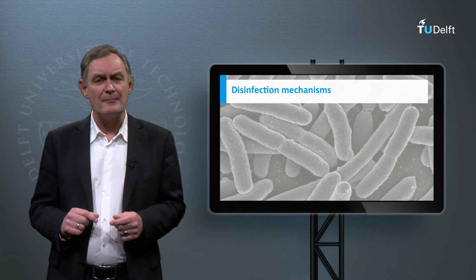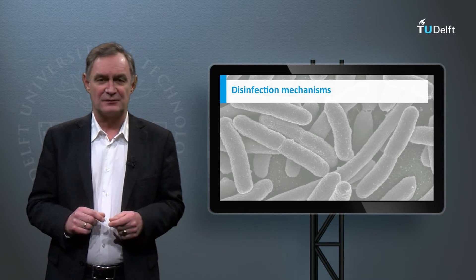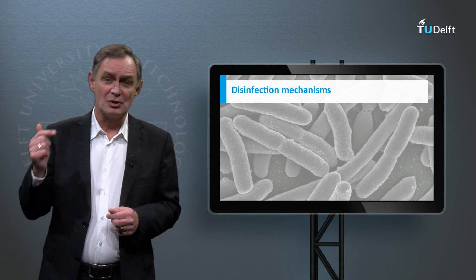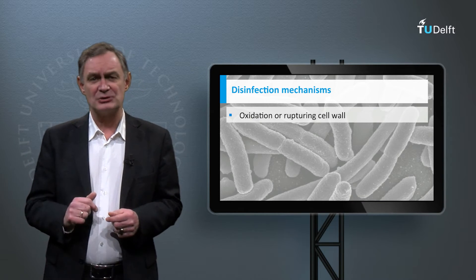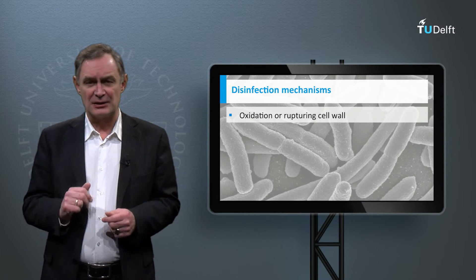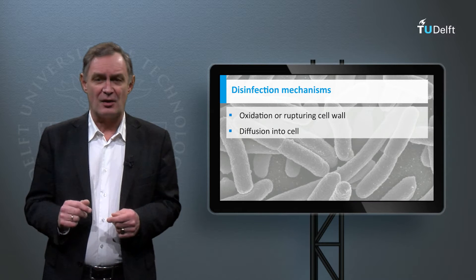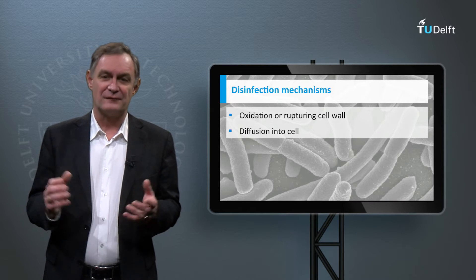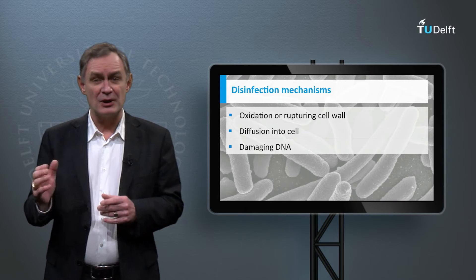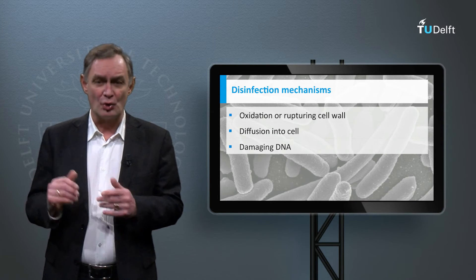Microorganisms are eliminated by disinfection following different steps. First, the chemical disinfectants oxidize or rupture the cell wall. Subsequently, the disinfectants can enter into the cell by means of diffusion, and finally they damage the DNA, so that the microorganisms cannot replicate and/or die.